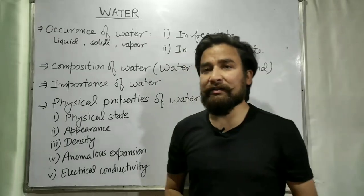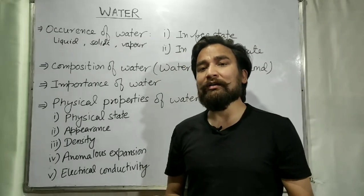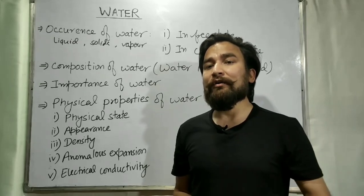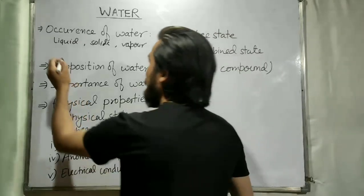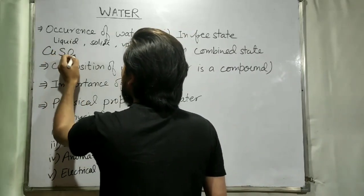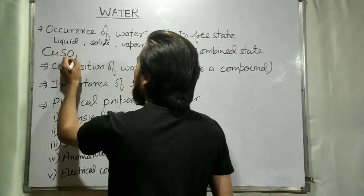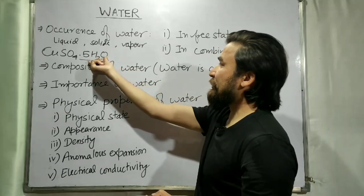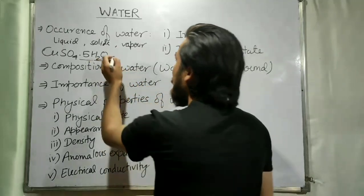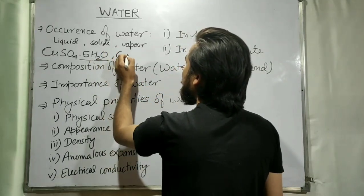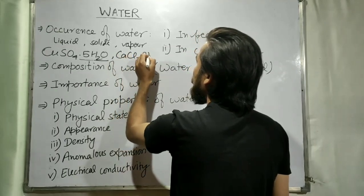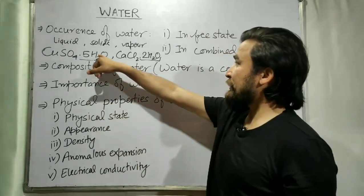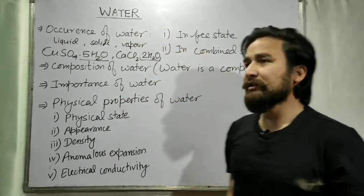In combined state, water does not occur independently but it is part of the molecules of other substances. For example, hydrated copper sulphate — the formula of hydrated copper sulphate is CuSO₄·5H₂O — so it exists as water of crystallization. We will discuss water of crystallization later. Similarly, in other compounds like CaCl₂·2H₂O, which is hydrated calcium chloride. So water can exist in free state as well as in combined state.